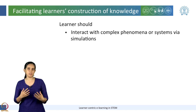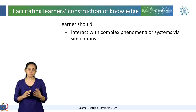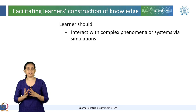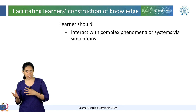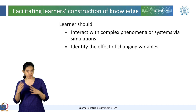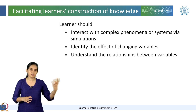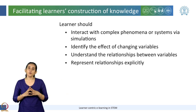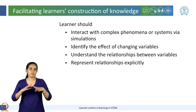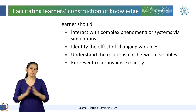To implement this principle in an e-learning context — that is, to facilitate learners' construction of their own understanding — we should provide them opportunities to interact with complex phenomena, systems, or real-world scenarios, for example via simulations. We should make the learner identify the effects of changing variables, understand the relationships between variables, such as what happens if something increases or something else decreases. We should make learners represent these relationships explicitly using diagrams, graphs, and text, and translate between these different representations.